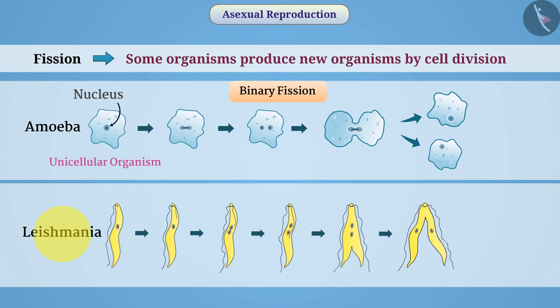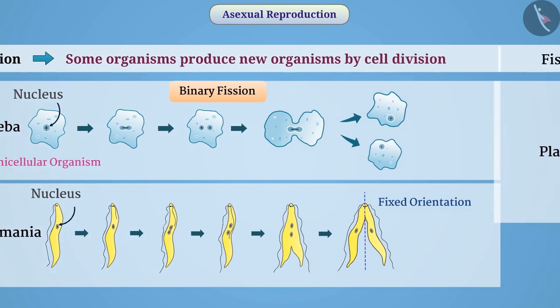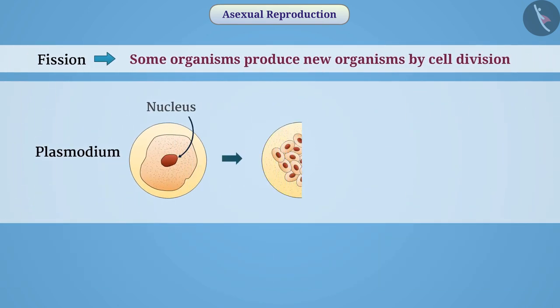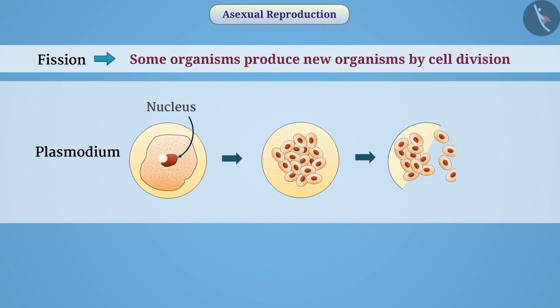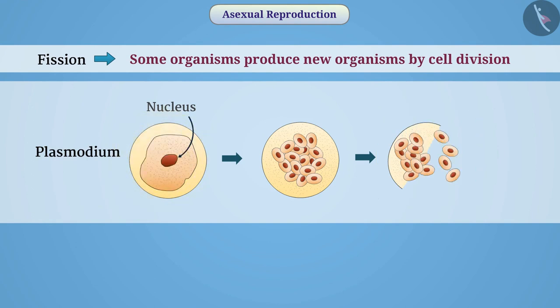Some unicellular organisms, such as Leishmania, have a more organized body structure. In such organisms, after the division of the nucleus, the cell divides from a fixed orientation. In some organisms, such as the malaria parasite Plasmodium, one cell divides into several cells. We call this multiple fission.